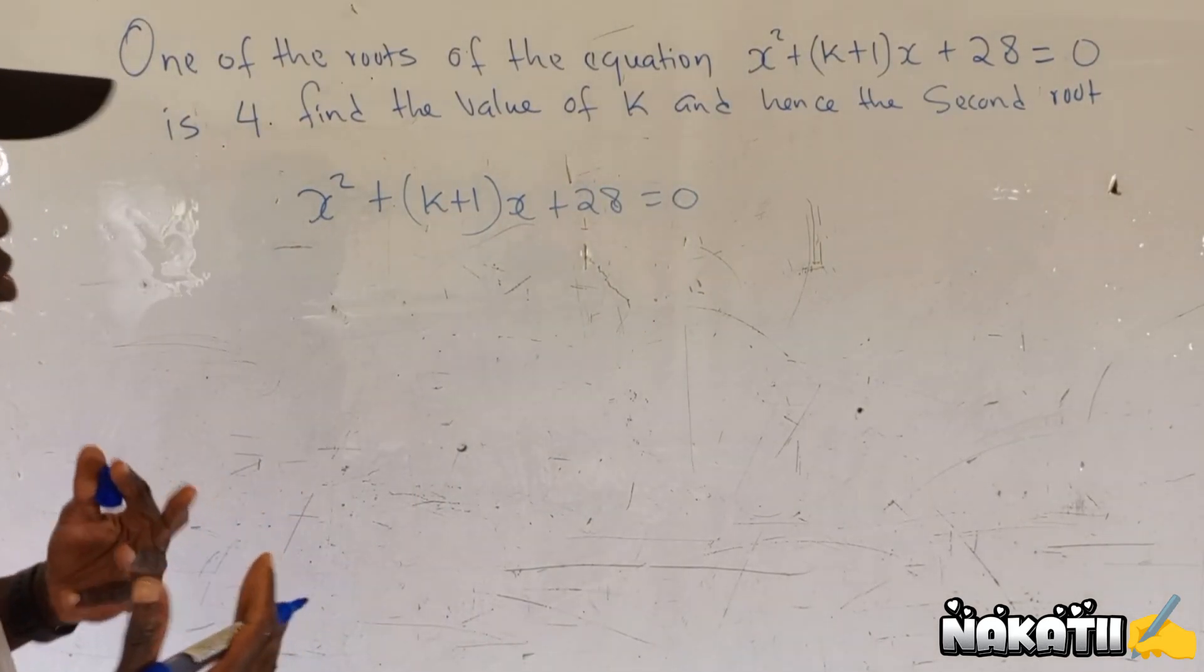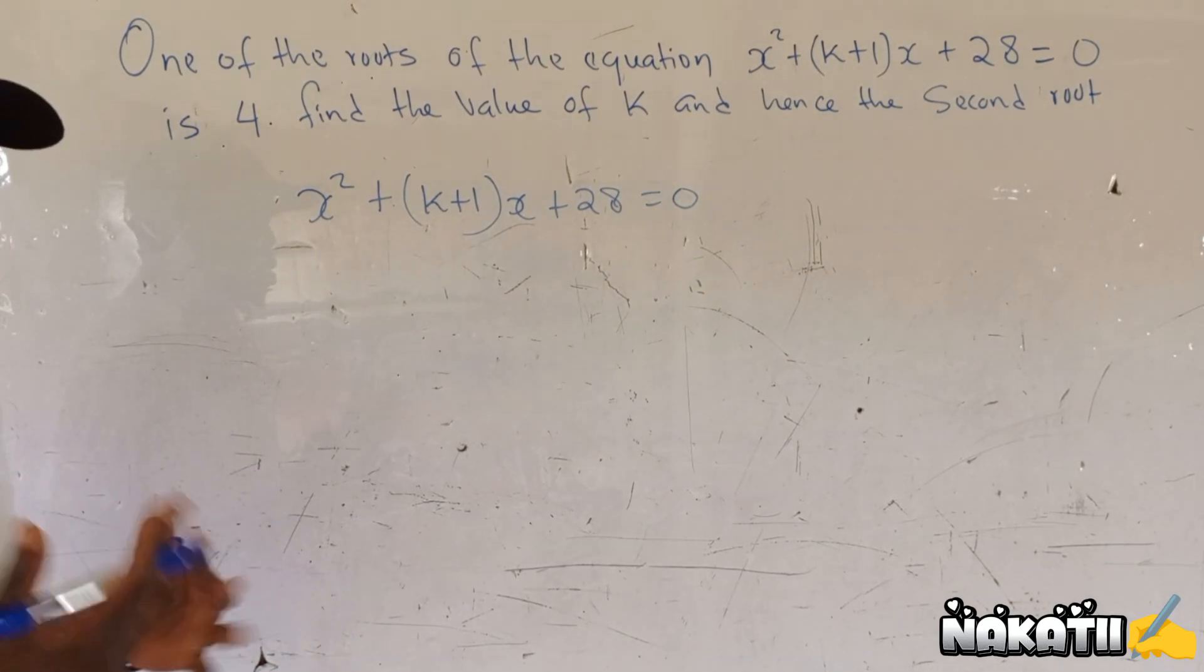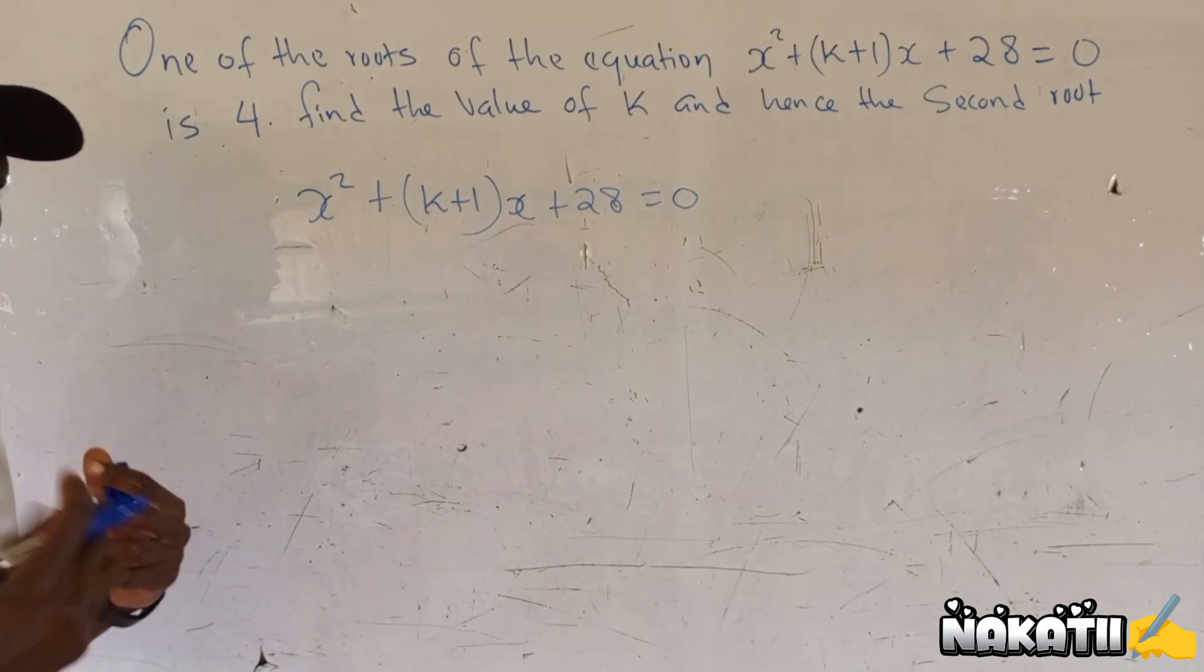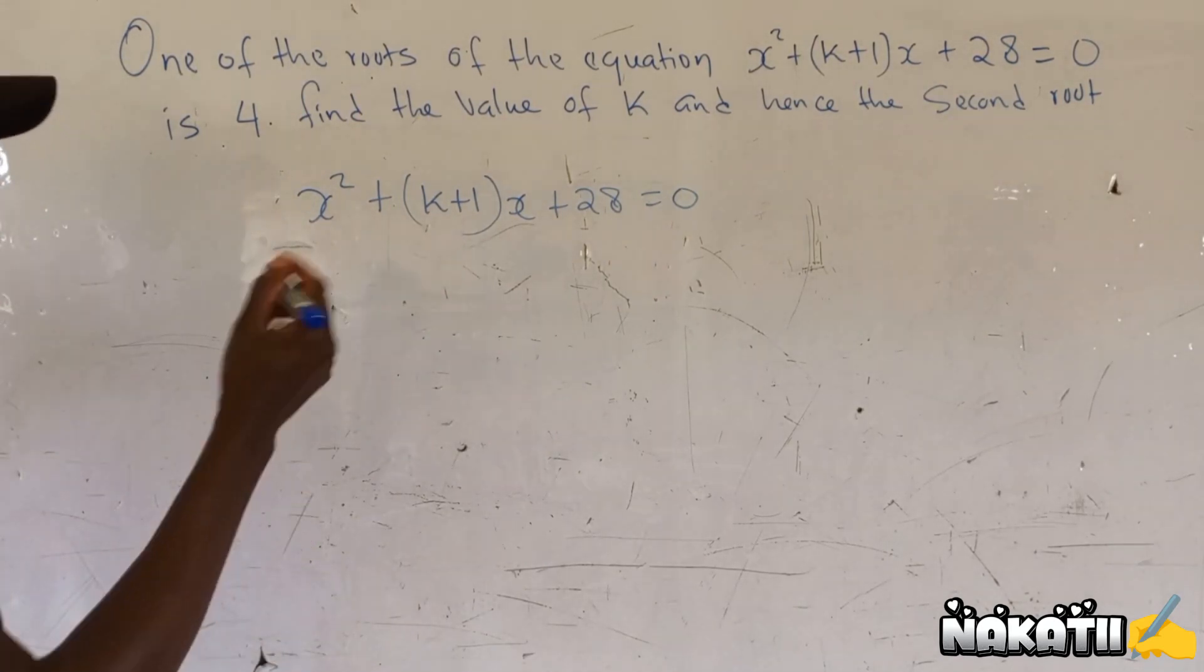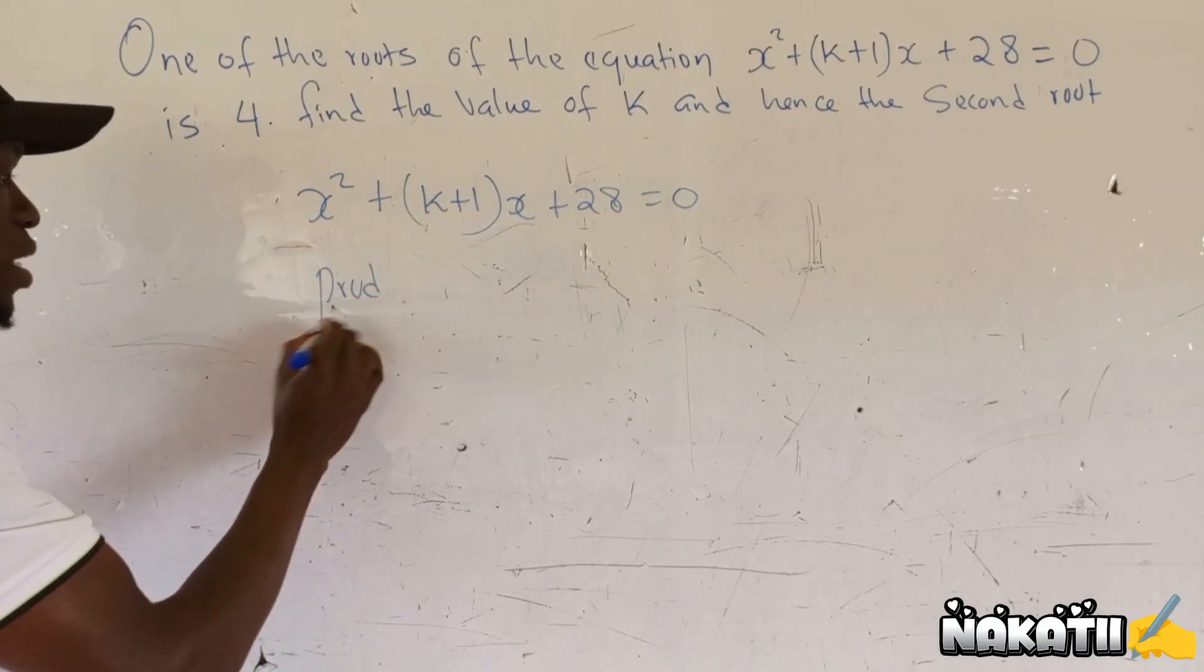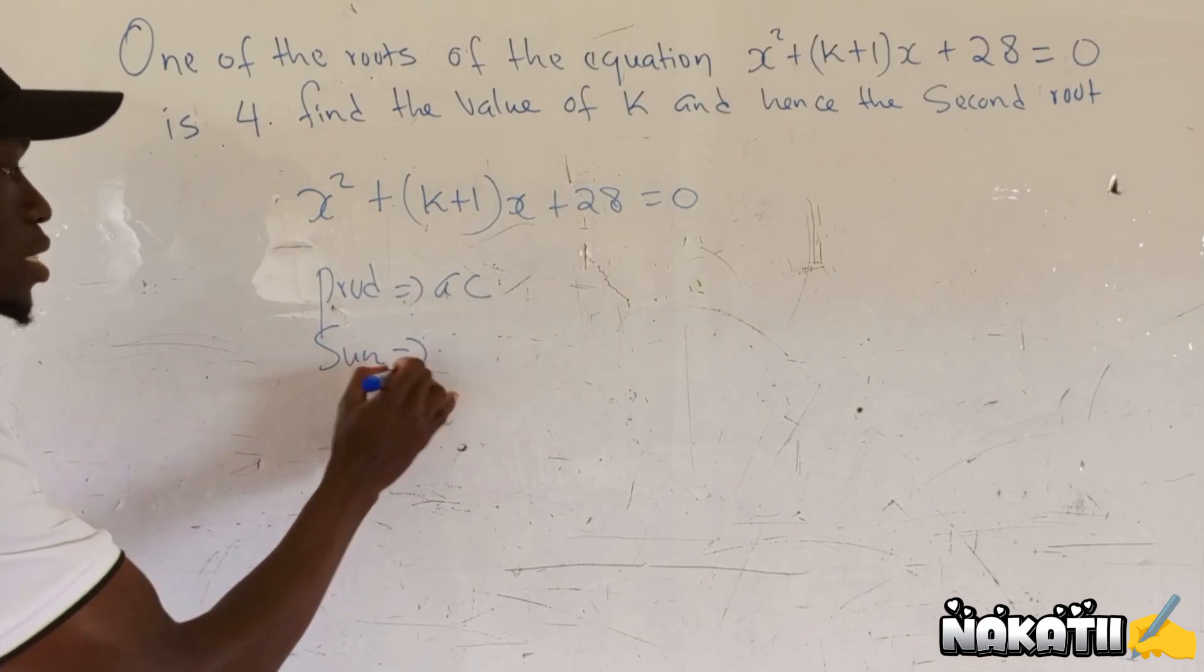Now we use the method we used in form 2 of solving using the factorization method. And in that method, we say product and sum. So we get product.